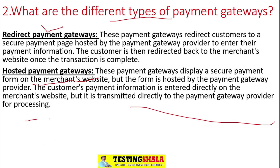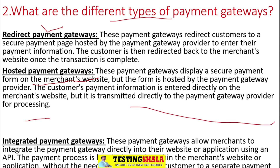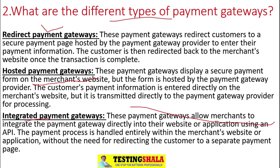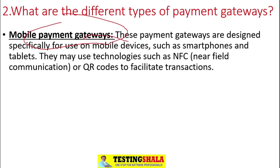The third type is integrated payment gateways, where the payment gateway allows merchants — such as Amazon or Flipkart — to integrate the payment gateway directly into their website. Customers can enter all information without opening any new page. The fourth type is mobile payment gateways, which are specifically designed for mobile users such as smartphones or tablets, and use technologies such as near-field communication (NFC) or QR codes to facilitate online financial transactions.